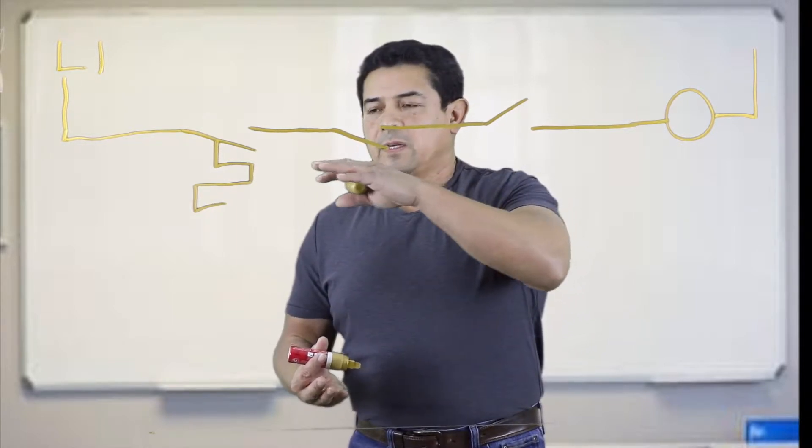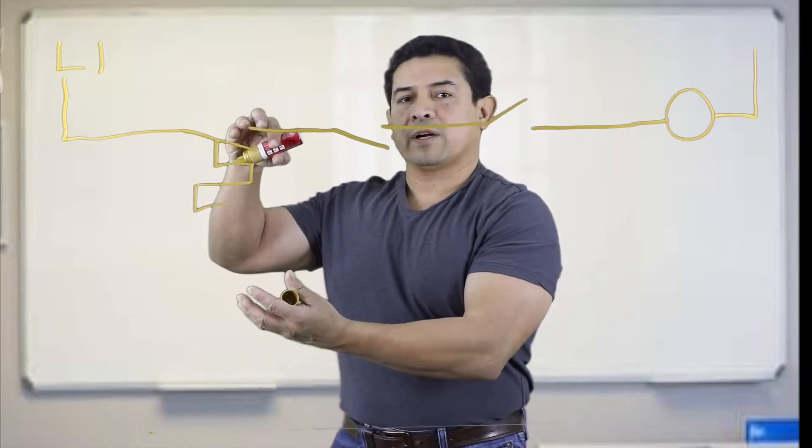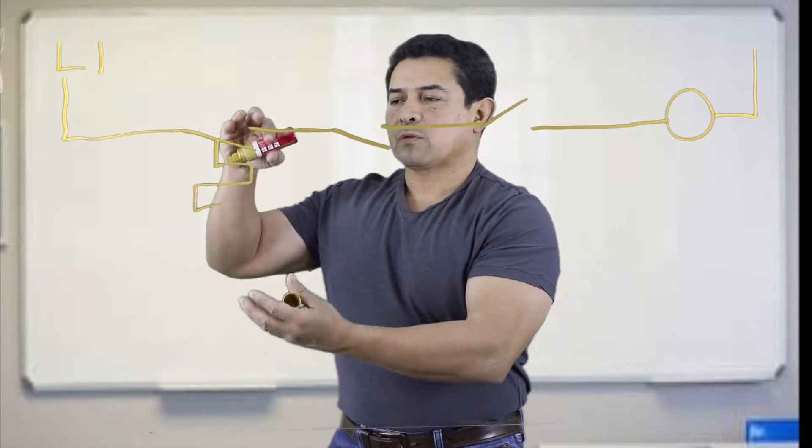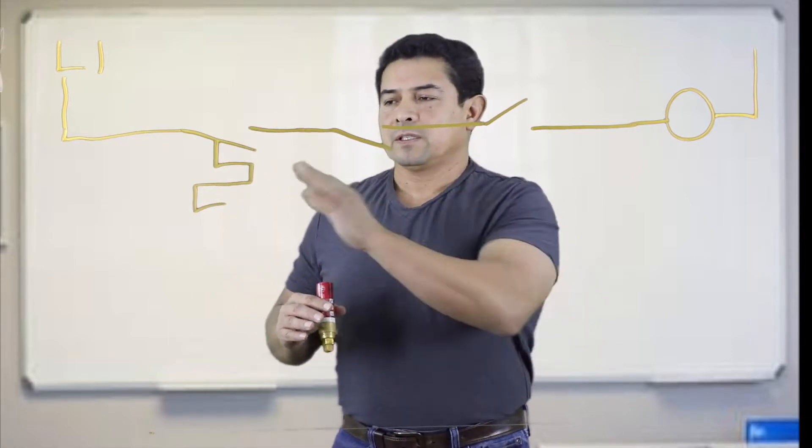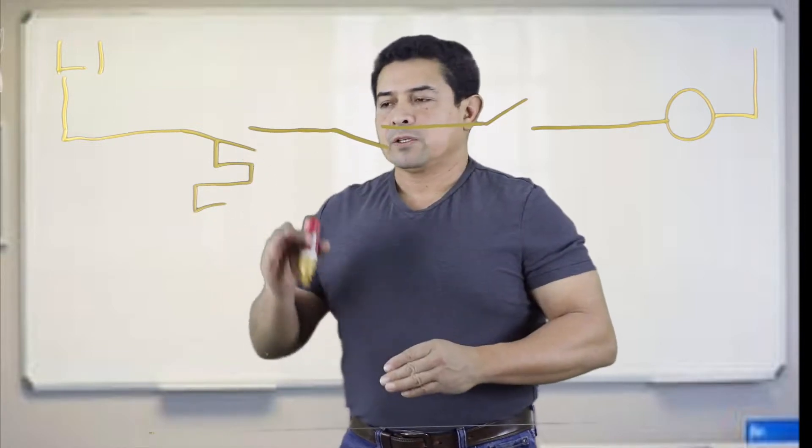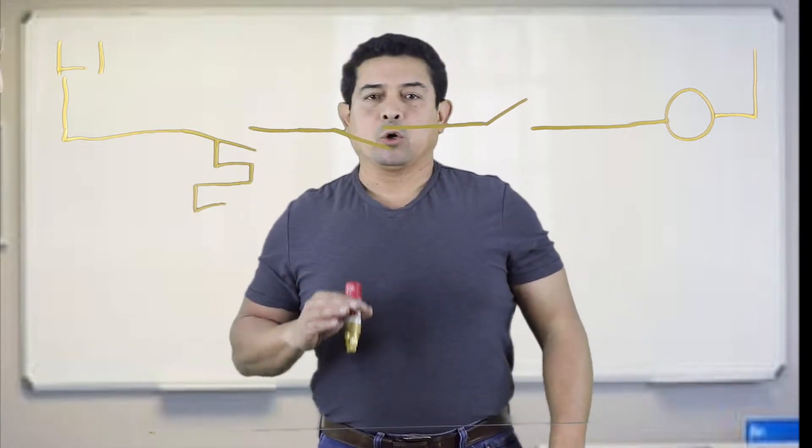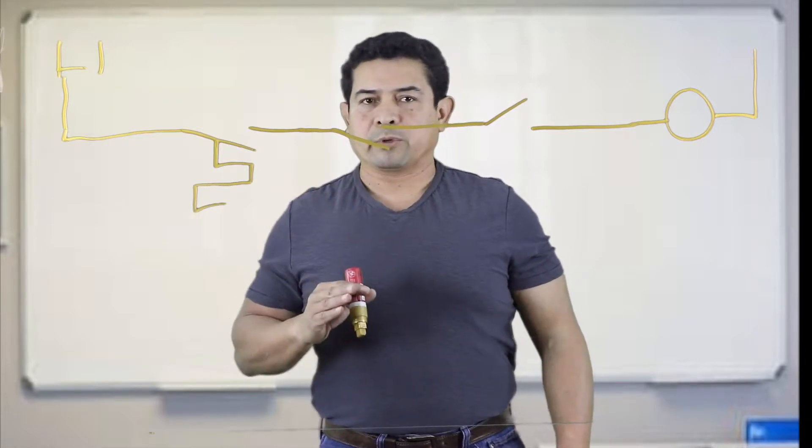So this switch right here is going to expand when the temperature rises. Once the temperature rises, that's going to close and power is going to go through. Temperature drops, it's going to contract. It's going to open up. So this switch is a temperature switch that opens on temperature fall or closes on temperature rise.